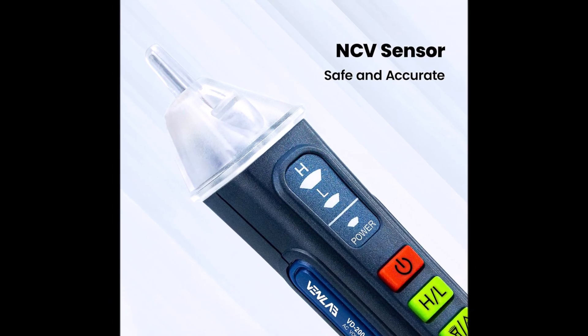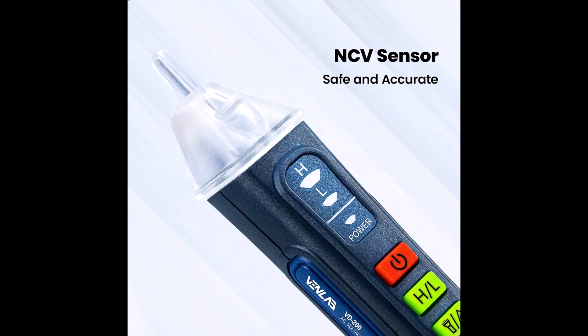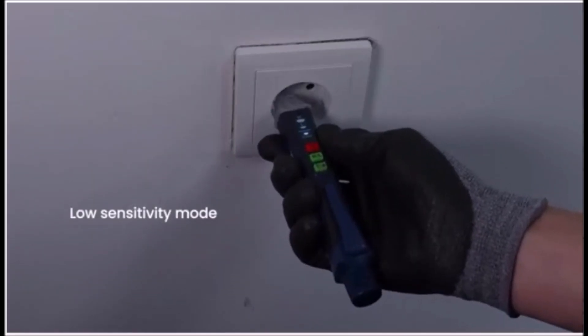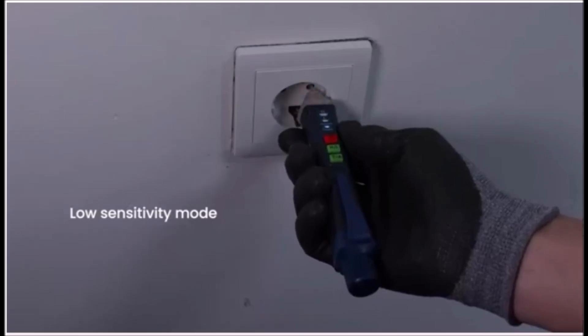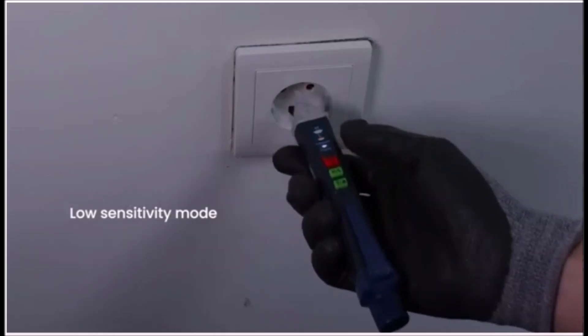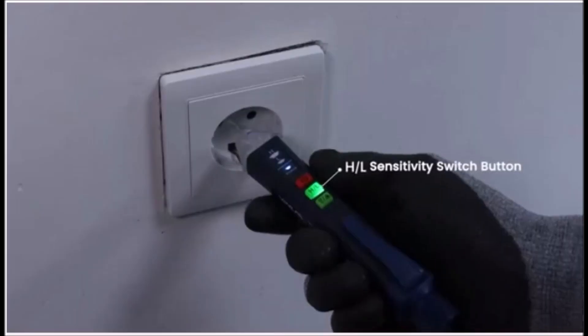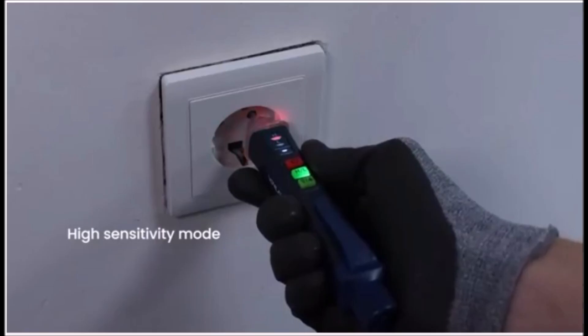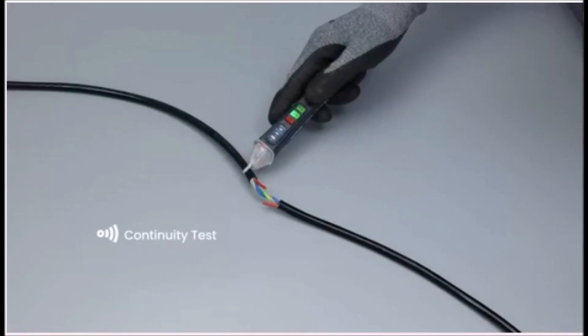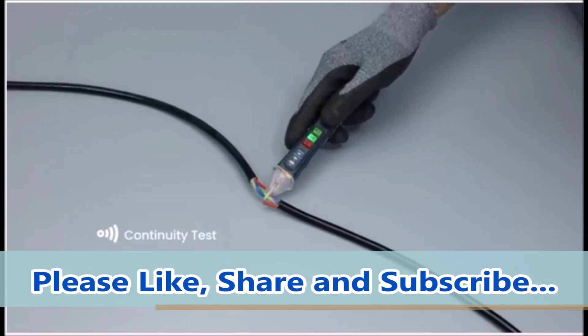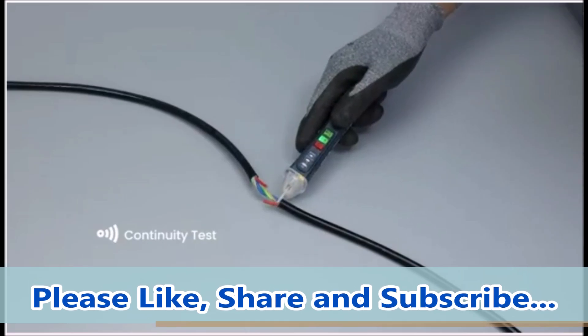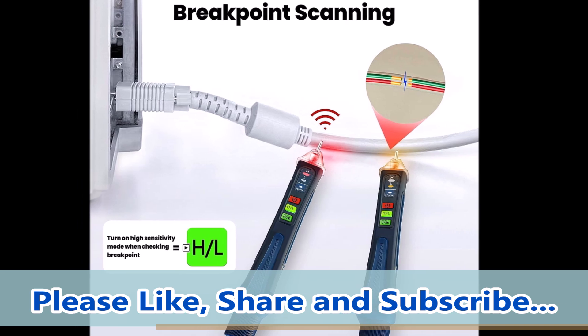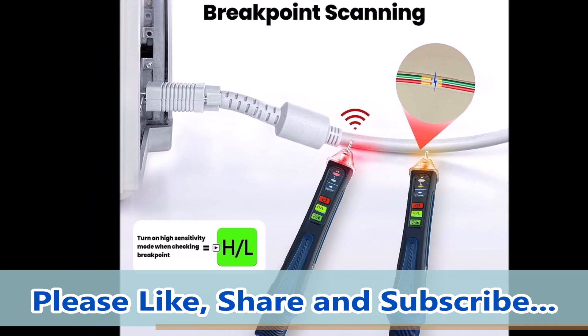A red glow and rapid beeping signal high voltage, while yellow light and slower beeps indicate lower levels. The built-in flashlight is a helpful feature for working in dark areas or during power outages, and the red-pointing light adds extra visibility on job sites. The LCD display provides clear readings, and the compact design makes it easy to carry in a pocket or tool pouch. Ideal for electricians, maintenance workers, and DIY users, this tester improves safety and speeds up troubleshooting without the need for direct wire contact.